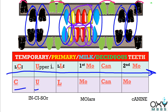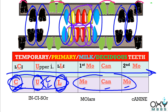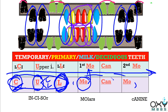To remember this sequence, we have a wonderful rhyme: 'CuL Mo Can Mo.' From C, it is lower central incisors. From U, it is upper incisors — including central as well as lateral incisors. From L, these are lower lateral incisors. From Mo, these are first molars. From Can, canines. And from this Mo, these are second molars. By this rhyme, CuL Mo Can Mo, you can remember this order of eruption.